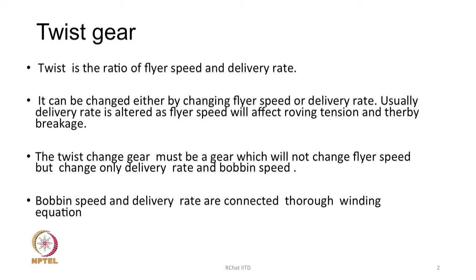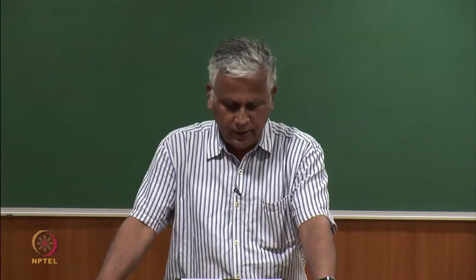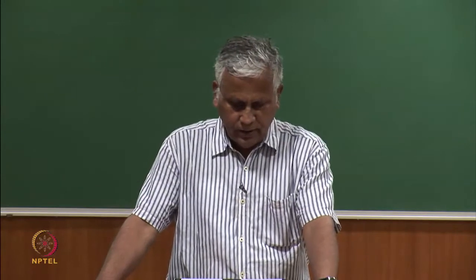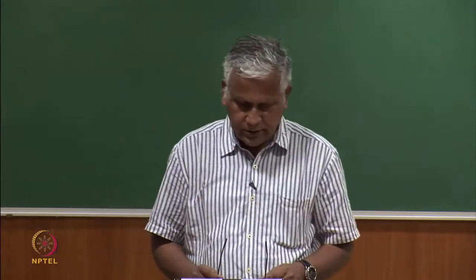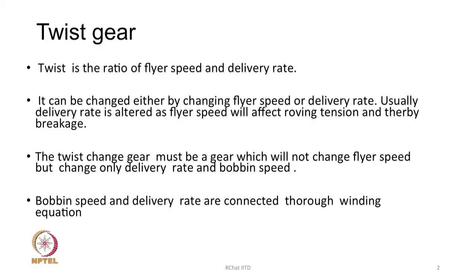There has to be some mechanism to change the twist on the machine. Twist is the ratio of flyer speed and delivery rate — these two are important for deciding the twist level in a roving. Since twist depends on this ratio, it can be changed either by changing flyer speed or by changing delivery rate.